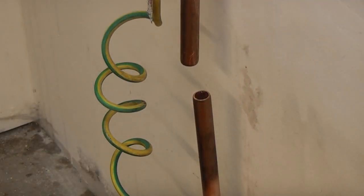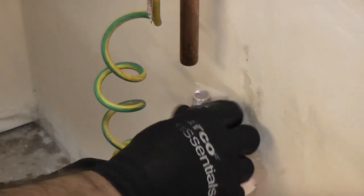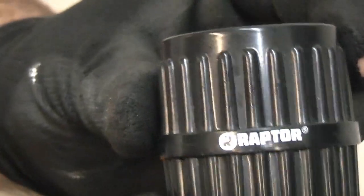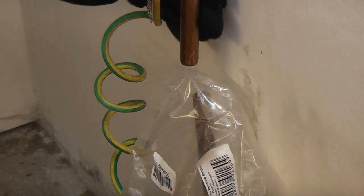We now need to deburr both pieces of cut pipe. I'm just going to put a bag over there to stop any of the copper debris dropping down the hole. Then I'm going to take a deburring tool and I'm going to use that to remove the burrs from the copper pipe.